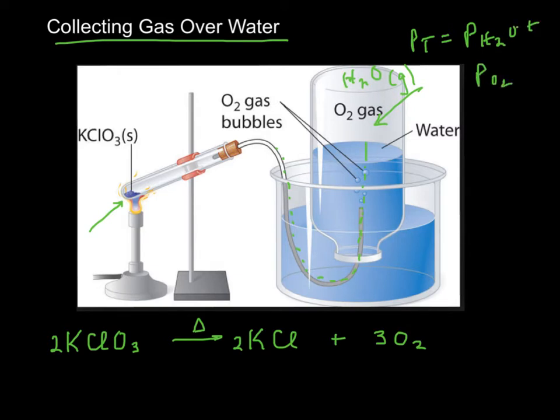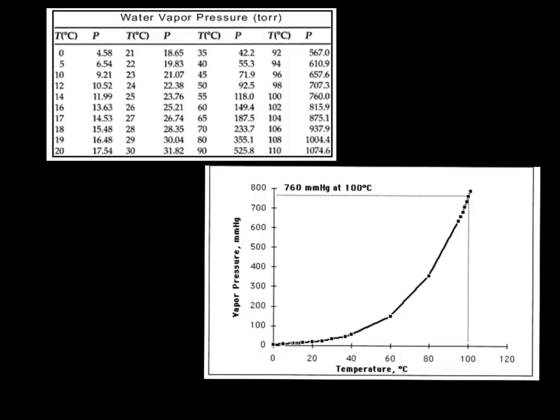The trick is usually that we want to try to figure out just what the partial pressure of oxygen is. So you can see, if you know the total pressure, you could subtract the vapor pressure of water. Is it hard to find the vapor pressure of water? Actually, no, it's quite easy. You can find it in tables.